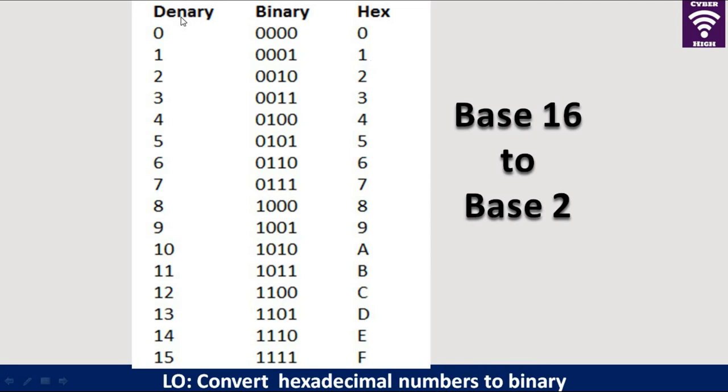You can clearly see that the denary value for 0 up to 9 is the same as in hex, and then when we go to binary, these numbers keep changing. Finally, at the bottom, we have 15 in denary, which is 1111, and it corresponds to F in hexadecimal numbers.